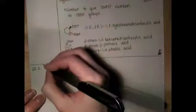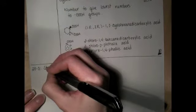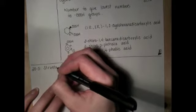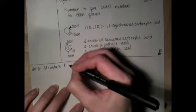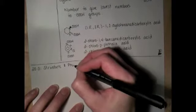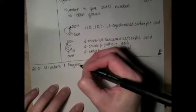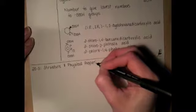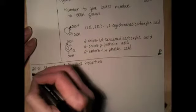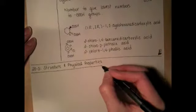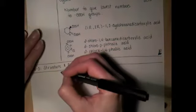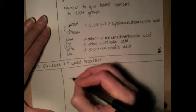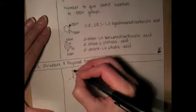The next section that we're going to do is section 23 on the structure and physical properties of carboxylic acids. So we're going to look at melting point, boiling point, things like that.